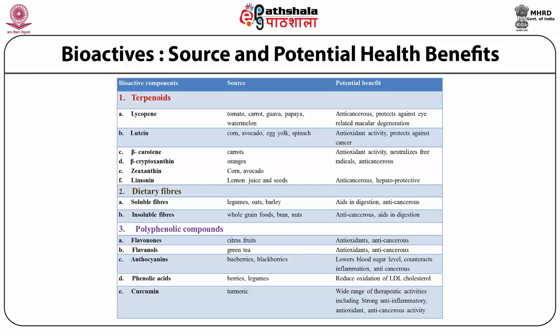Beta-carotene, beta-cryptoxanthin, and zeaxanthins are present in carrots, oranges, corn, and avocados, and all have significant antioxidant activity that neutralizes free radicals, rendering them anti-cancerous. A recent compound finding a lot of application is limonin — the component which causes bitterness in juices, present in juice as well as seeds — with very significant anti-cancer and hepatoprotective properties. The dietary fibers commonly found in homes, such as oats and whole grain foods, are anti-cancerous and aid in digestion.